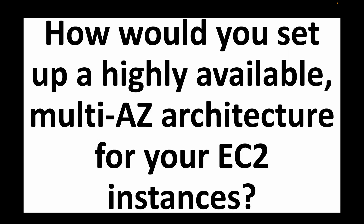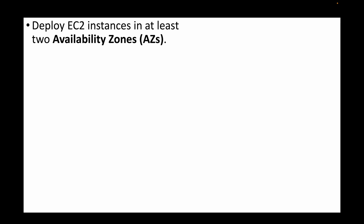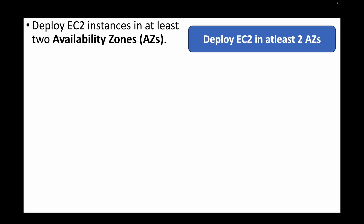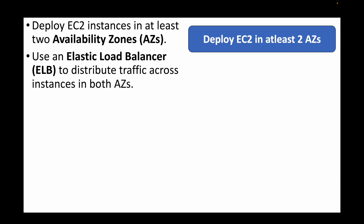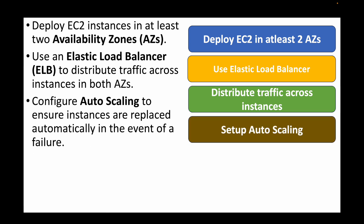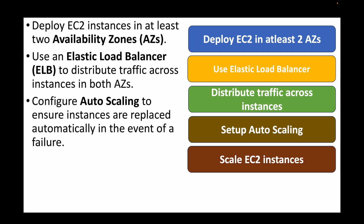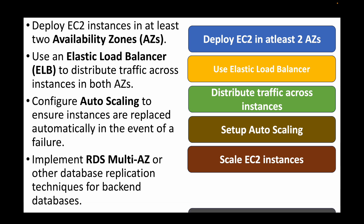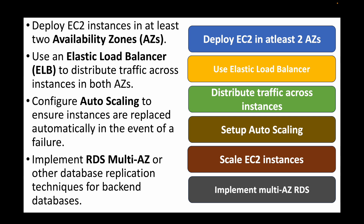The next question: how would you set up a highly available multi-AZ architecture for your EC2 instances? We will need to launch instances in at least two availability zones, and place them behind a load balancer to distribute traffic across instances running in multiple AZs. We can also configure auto scaling to automate scaling based on metrics like CPU utilization. We can also implement multi-AZ RDS or other database replication techniques to make the back-end database highly available.